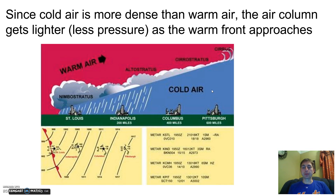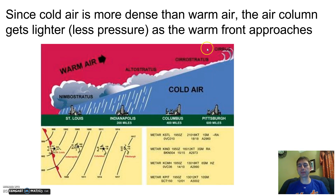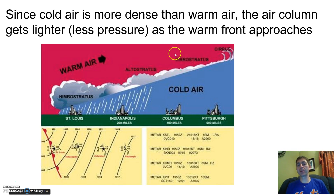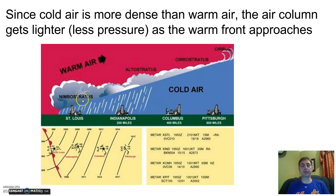The falling barometer also makes sense from this picture. Barometers measure pressure, and atmospheric pressure is the weight of the air. A big column of cold air sitting over Pittsburgh, with a little warm air riding over the top, weighs a lot — so Pittsburgh has higher pressure. Columbus has a smaller patch of cold air and more warm air above it, which is less dense and lighter, so there's less weight in the air column. Indianapolis has even less cold air, so we see that steady drop in the barometer as the warm front approaches.